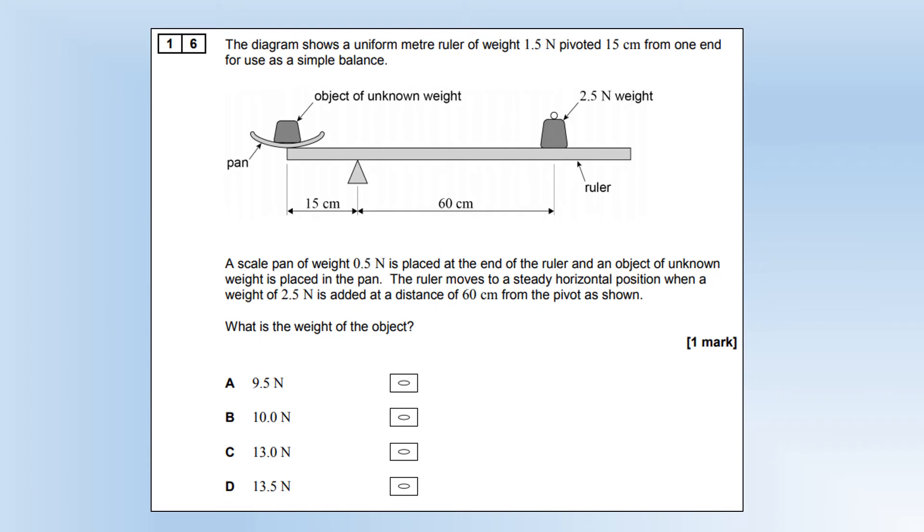The diagram shows a uniform metre ruler of weight 1.5 newtons, pivoted 15 centimeters from one end, used as a simple balance. A scale pan of weight 0.5 newtons is placed on the end of the ruler, and an object of unknown weight is placed inside it. The ruler moves to a steady horizontal position when a weight of 2.5 newtons is added, a distance of 60 centimeters from the pivot. What is the weight of the object? Taking moments about the pivot point, we know 0.5 plus W is the total weight force of the pan and the object, times by 0.5, so that's the moment of those objects.